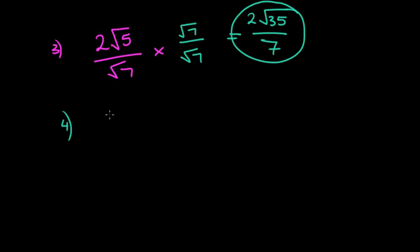Let's try a little bit more challenging now: 3 over 2 root 3. This is more challenging because we don't just have the surd by itself - we now have a number in front of it. But we do it the same way. We want to times it by root 3 over root 3.